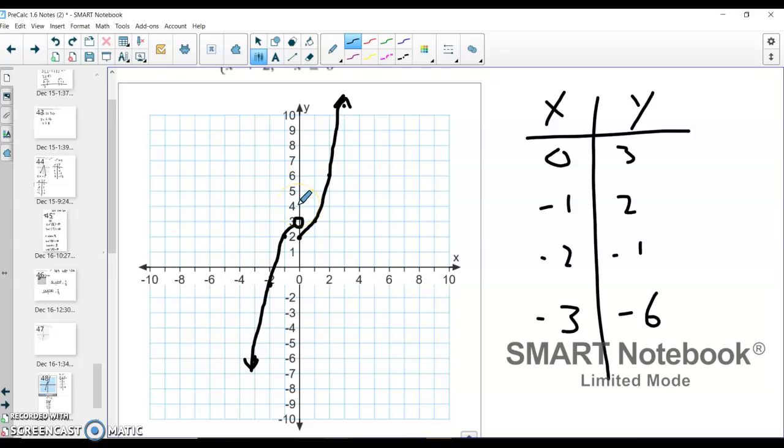So they don't necessarily need to intersect here. As long as we have the correct xy table, we have an open dot and a closed dot, we still have our function as is.